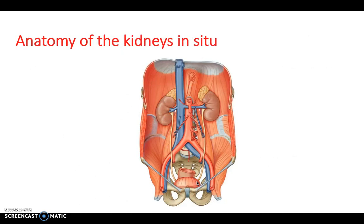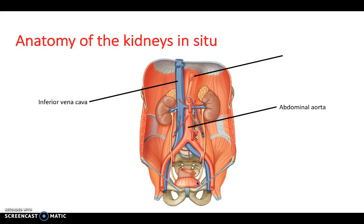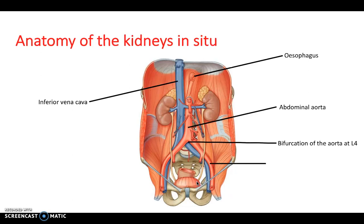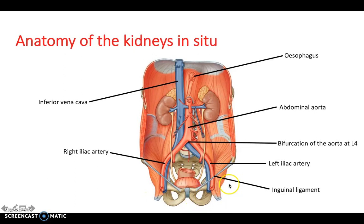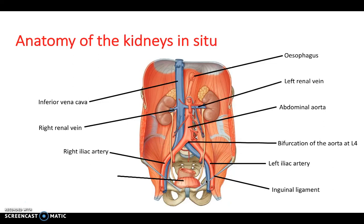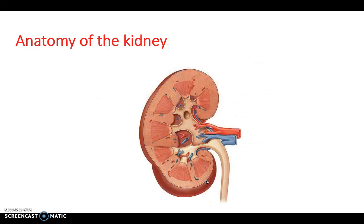Zooming out to look at the kidneys in situ, we can label additional elements: the inferior vena cava carrying blood back up to the heart, the abdominal aorta, the esophagus piercing through the diaphragm to the stomach. The bifurcation of the aorta occurs at L4 — lumbar level 4 — bifurcating into the left and right iliac arteries. The inguinal ligament runs diagonally on both sides. We can also see the right and left renal veins, and inferiorly the bladder.